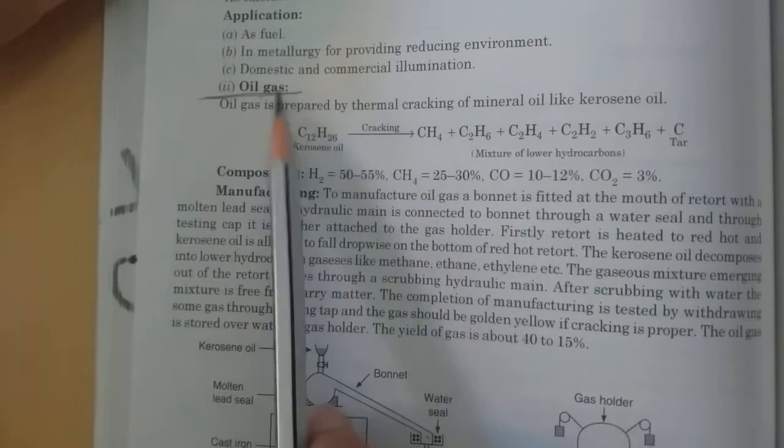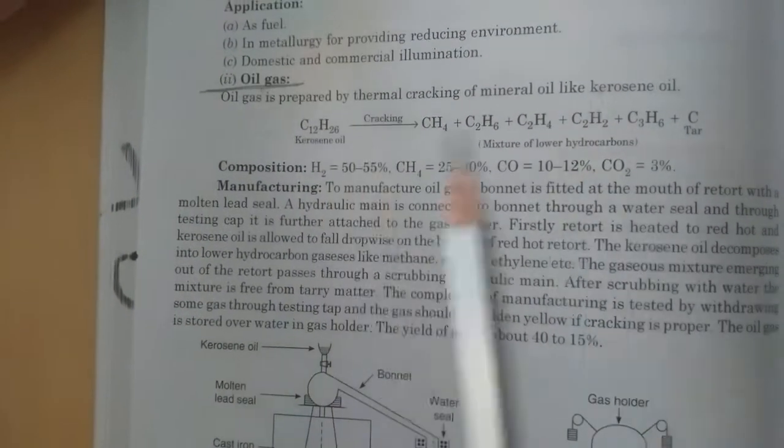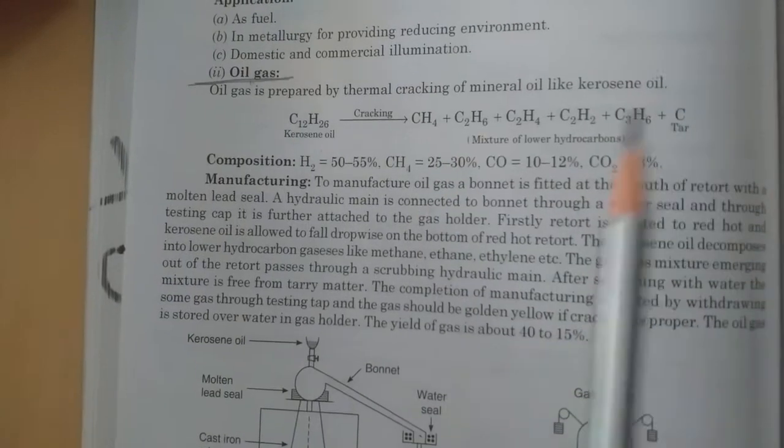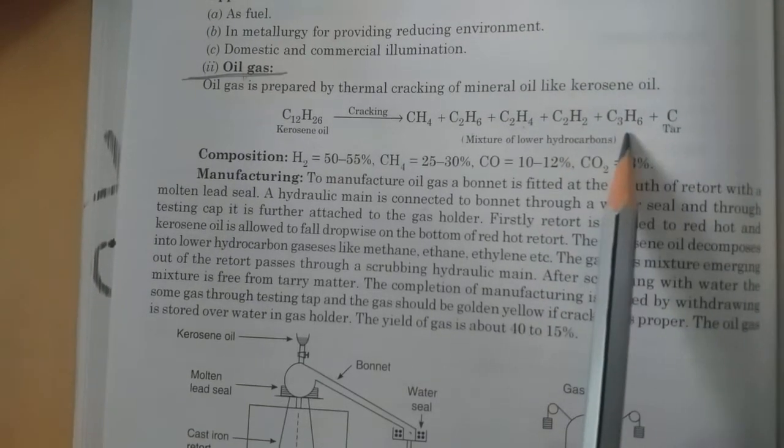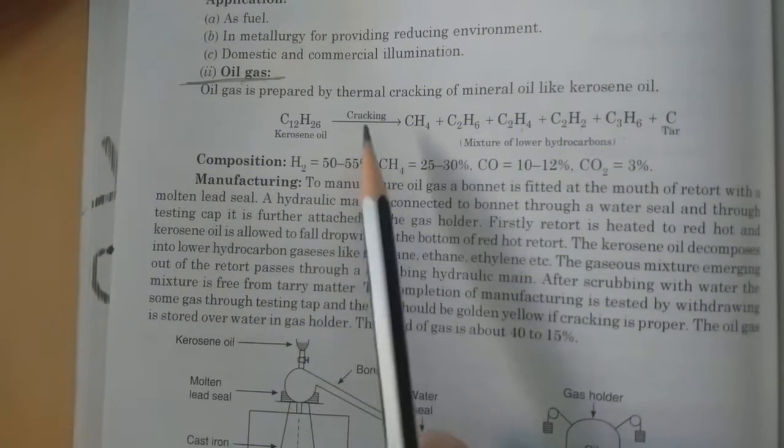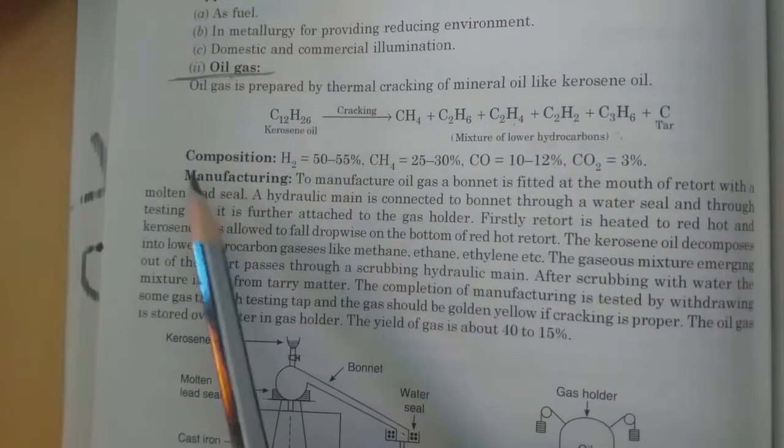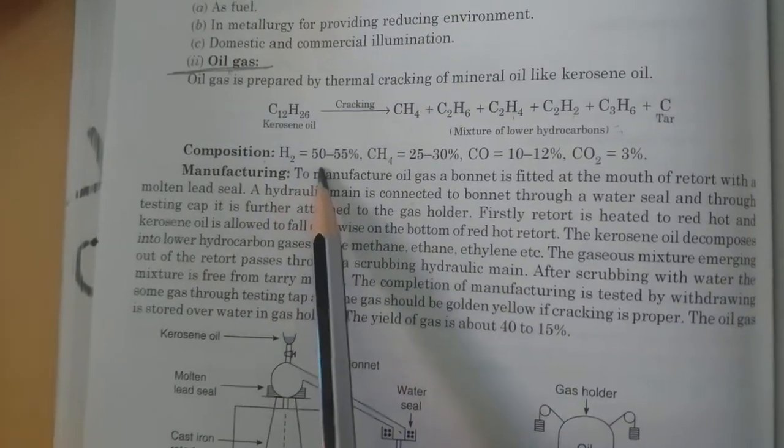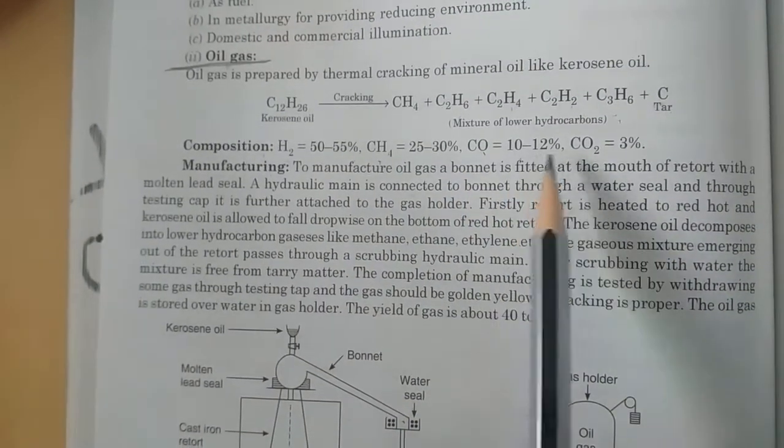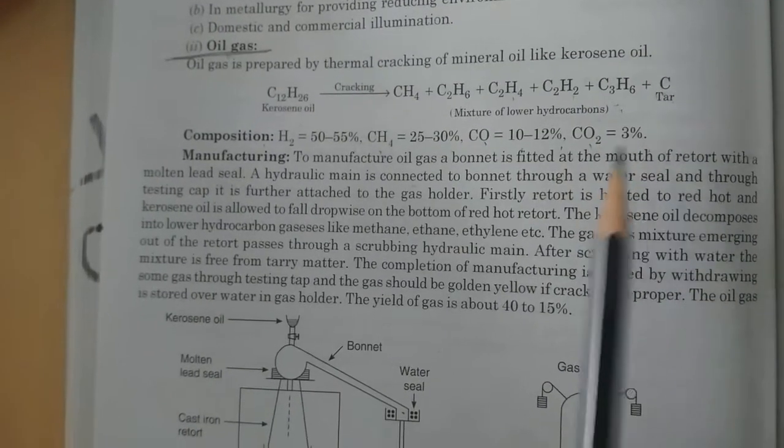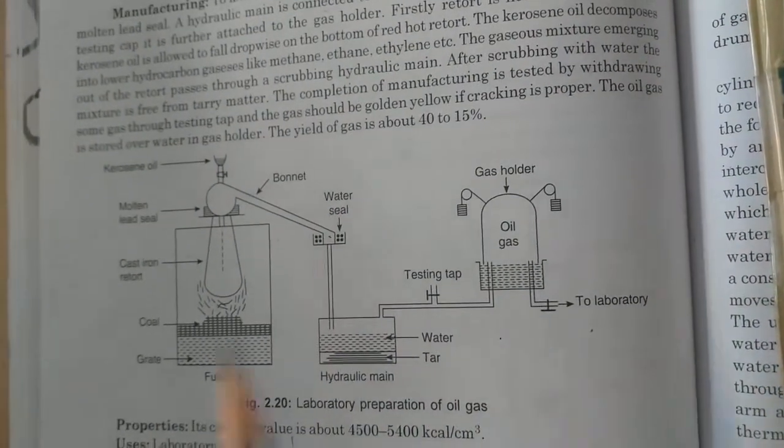Now the second gaseous fuel is oil gas. Oil gas is produced by thermal cracking of kerosene. After thermal cracking, a mixture of lower hydrocarbons is produced - methane, ethane, ethylene, and ethane. The composition of oil gas is: hydrogen 50 to 55%, methane 25 to 30%, carbon monoxide 10 to 12%, carbon dioxide 3%. Now manufacturing of oil gas.